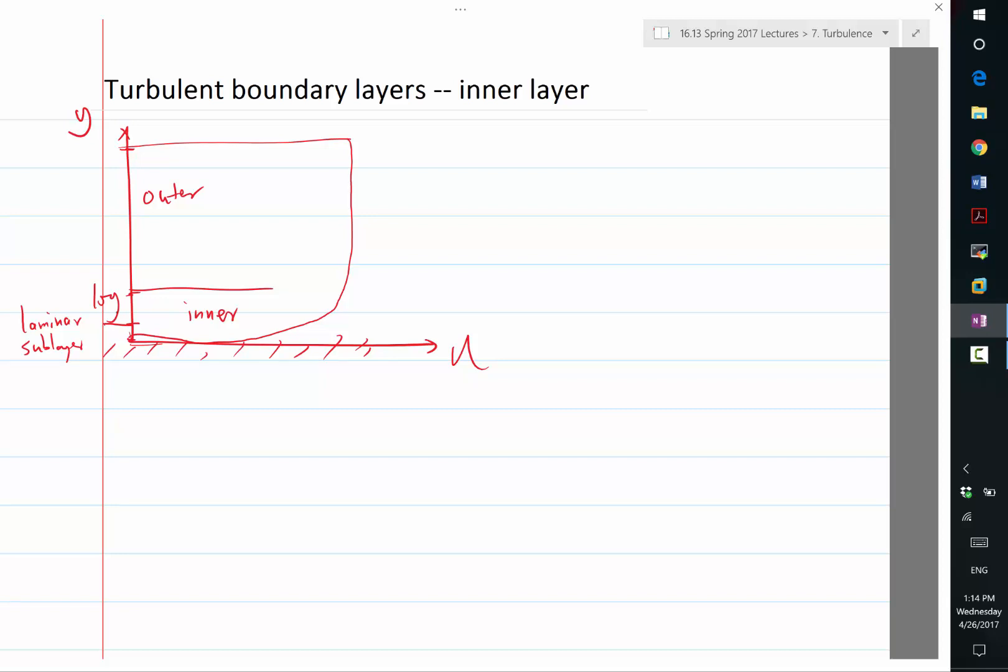If you have these assumptions, then the inner layer is universal. The inner layer velocity scale is U star, the length scale is Y star.